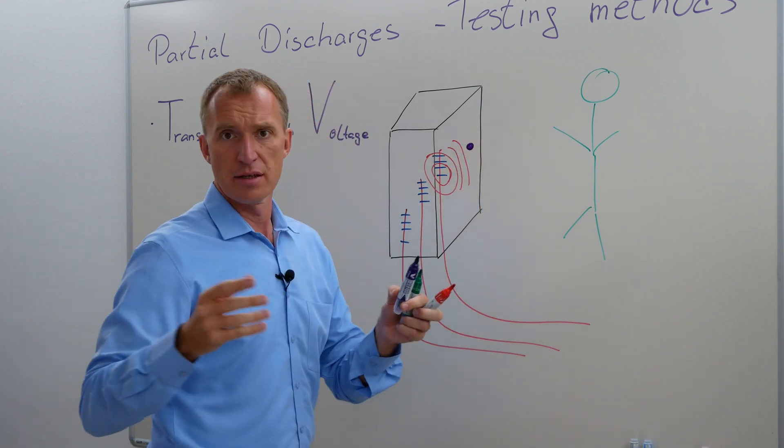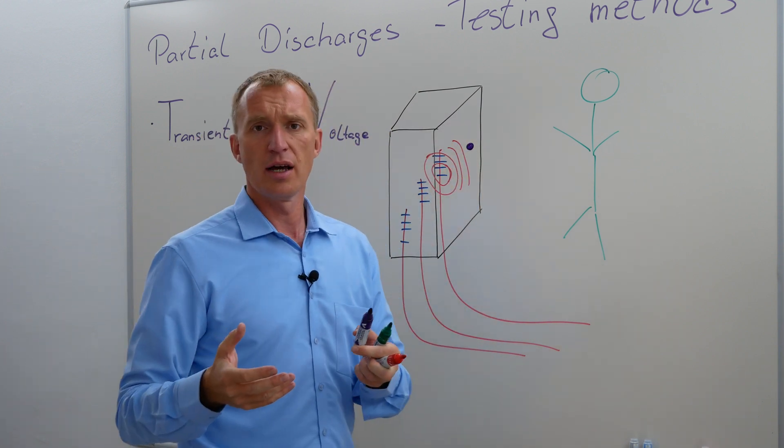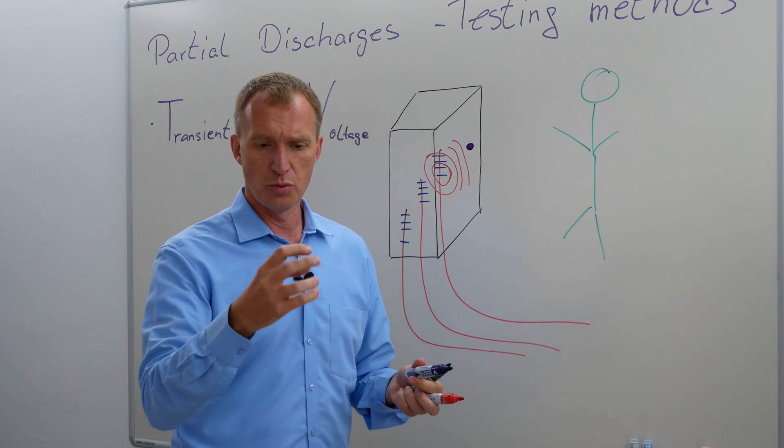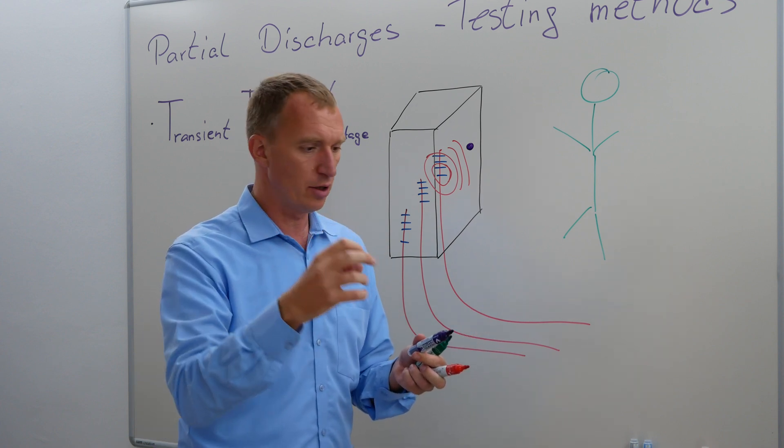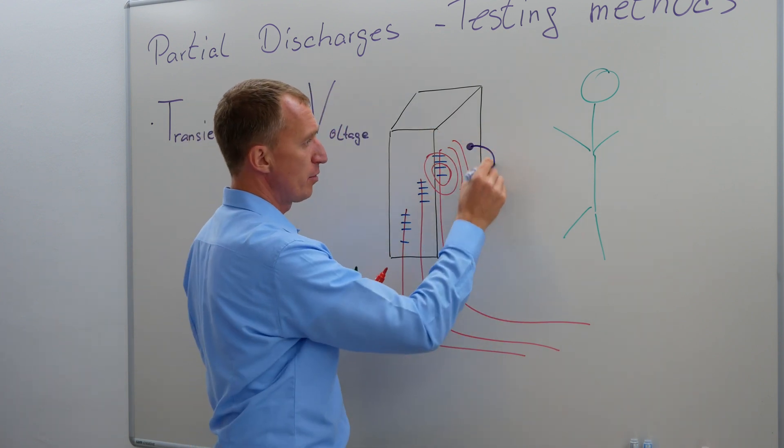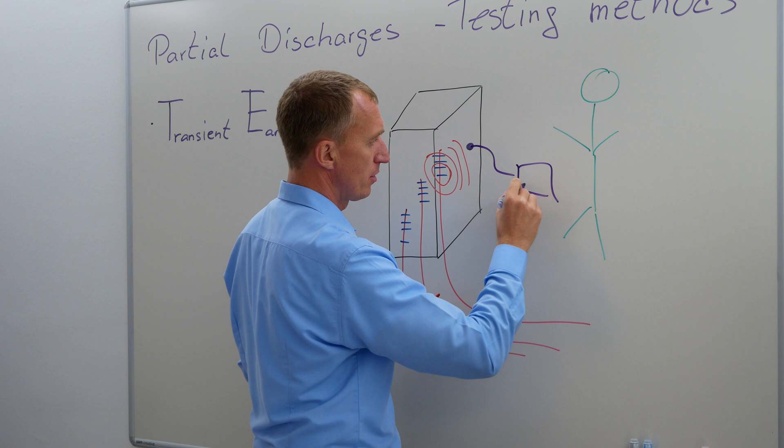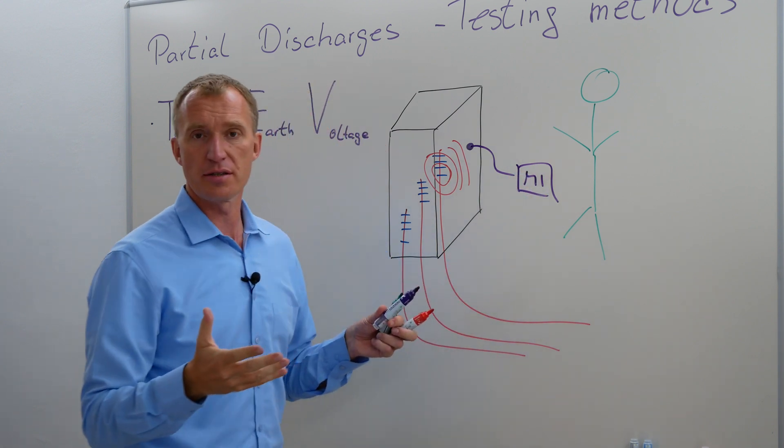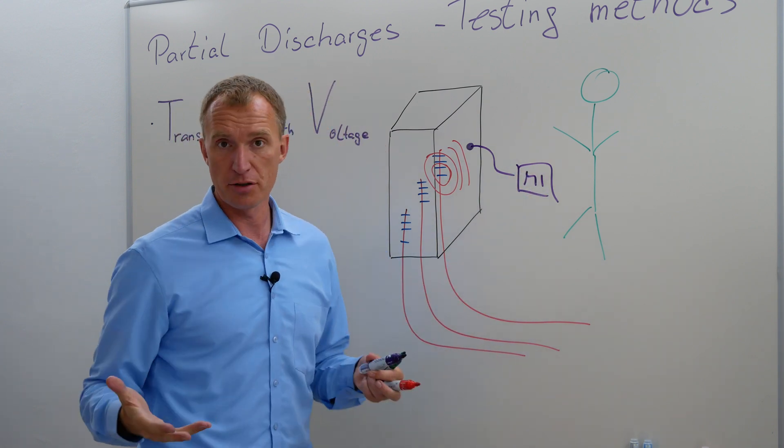They are usually capacitive sensors and there are quite a couple of manufacturers who produce them already with a magnet on it. So you put that on and you have a cable, and then you have a device, your measuring instrument, and then you can see if you sense any partial discharge or not.